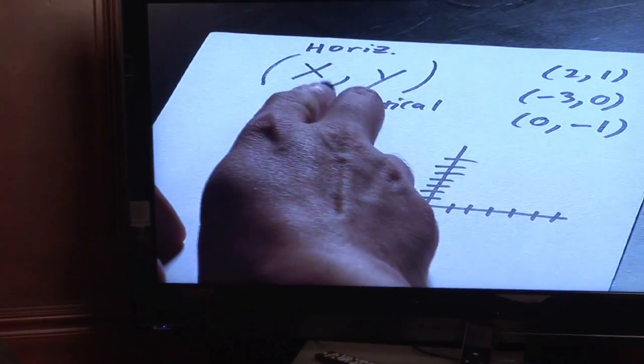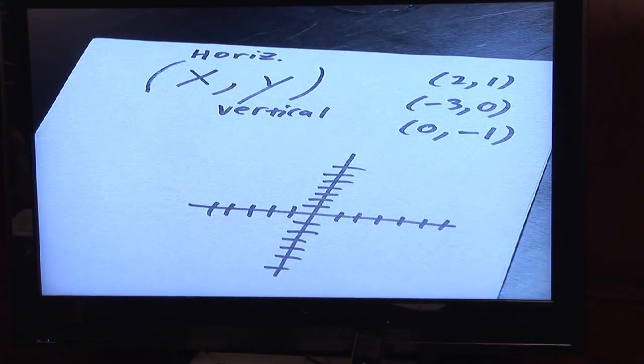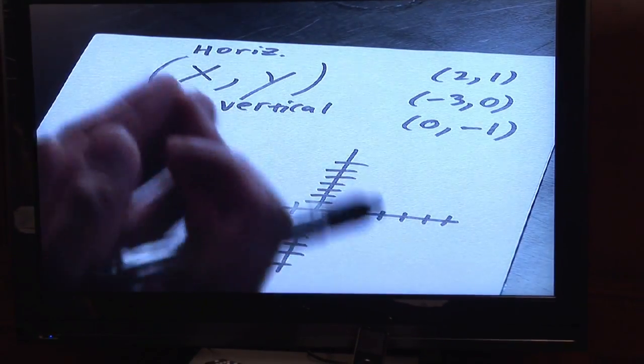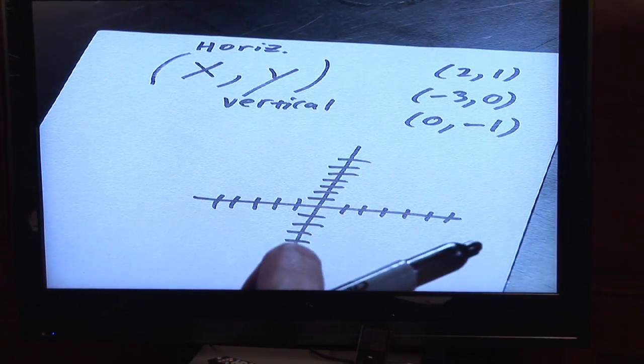The X is what's called your horizontal coordinate. That shows you if you have to go in a leftward direction or a rightward direction. If it's positive, you go in a right direction. If it's negative, you go in a left direction.